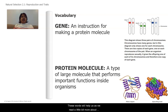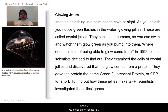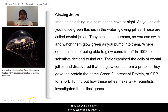These words will help us as we read more about what is going on in terms of genetics in organisms. The article we are going to read today is called Glowing Jellies. Imagine splashing in a calm ocean cove at night. As you splash, you notice green flashes in the water — glowing jellies. These are called crystal jellies. They can't sting humans, so you can swim and watch them glow green as you bump into them.